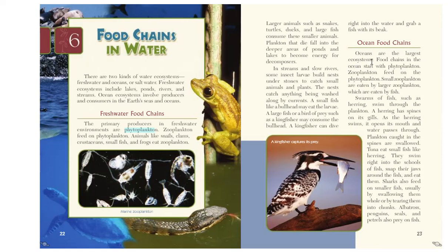Ocean food chains. Oceans are the largest ecosystems in the world. Food chains in the ocean start with phytoplankton. Zooplankton feed on the phytoplankton, small zooplankton are eaten by larger zooplankton, which are eaten by fish. Swarms of fish such as herring swim through the plankton — as a herring swims, it opens its mouth, water passes through, and plankton caught in spines on its gills are swallowed. Tuna eats small fish like herring by swimming into schools of fish and snapping its jaws. Sharks also feed on smaller fish, usually by swallowing them whole or tearing them into chunks. Albatross, penguins, seals, and petrels also prey on fish.